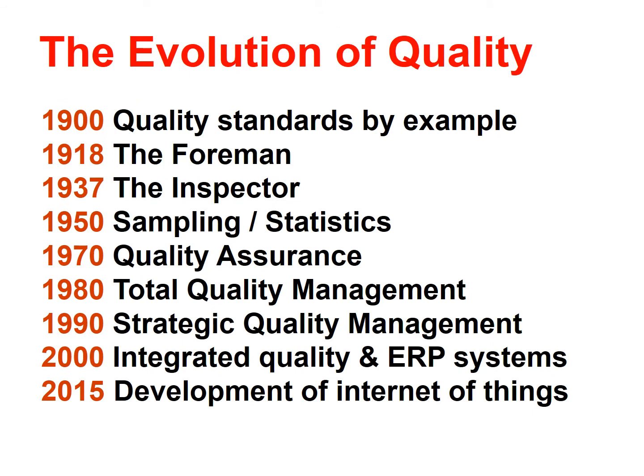We look at how quality has evolved over time. In 1900, quality standards were done by example — somebody would have a pot, and you would make a pot against that standard, trying to match yours to theirs. In 1918, they introduced the idea of a foreman, an expert who would oversee the work being done, and the concept of the inspector who would measure your work and tell you if it was right or wrong.